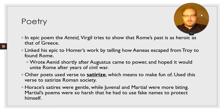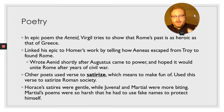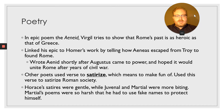In the epic poem the Aeneid, Virgil tries to show that Rome's past is as heroic as that of Greece. He linked his epic to Homer's work — Homer wrote the Odyssey and the Iliad, the Iliad talking about the Trojan War and the Odyssey about Odysseus's passage back home — by telling how Aeneas escaped from Troy to found Rome. Virgil wrote the Aeneid shortly after Augustus came to power, and he hoped it would unite Rome after years of civil war.